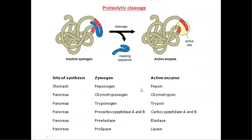The next method is proteolytic cleavage. Here an inactive form of an enzyme is converted into its active form. The inactive form of an enzyme is called a zymogen, also known as a proenzyme, which is inactive in nature. The inactive zymogen is useful for the storage of enzymes, and the active site is masked by a polypeptide chain. This prevents auto-catalysis. In proteolytic cleavage, the polypeptide chain is cleaved from the inactive zymogen, exposing the active sites, and the inactive form is converted into its active form.